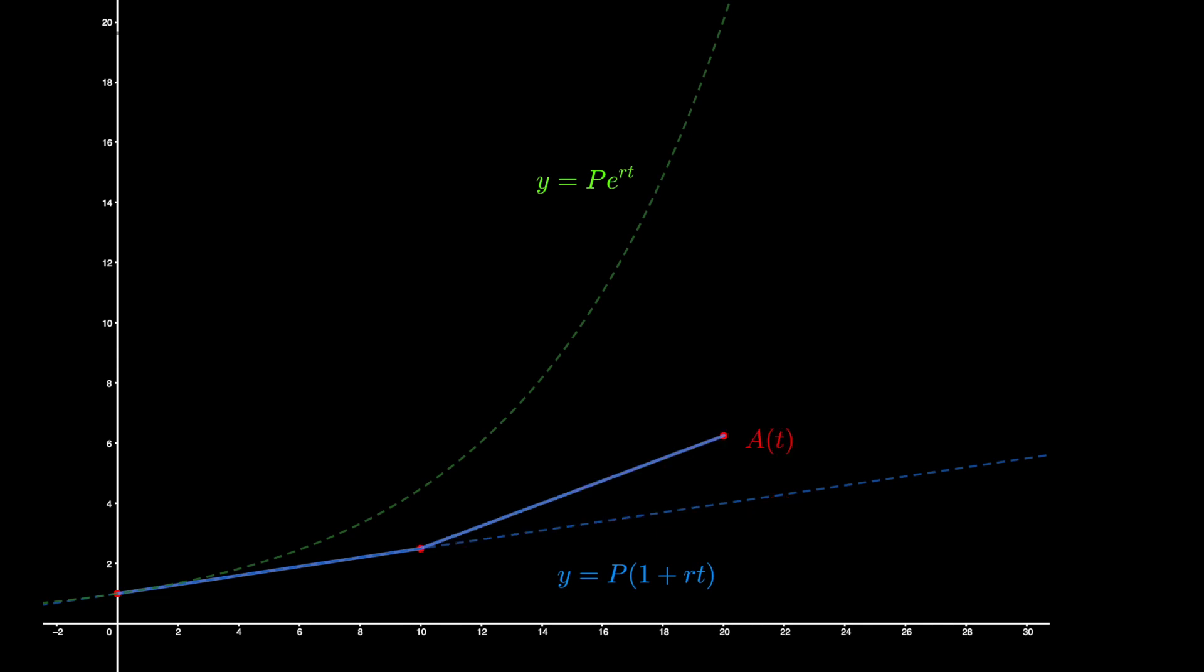Breaking up the total time into two periods gives two segments of the graph, with a slope increase representing how interest earned was put into the principal category, generating its own interest. Increasing the number of periods breaks it up into more segments, increasing the final amount.